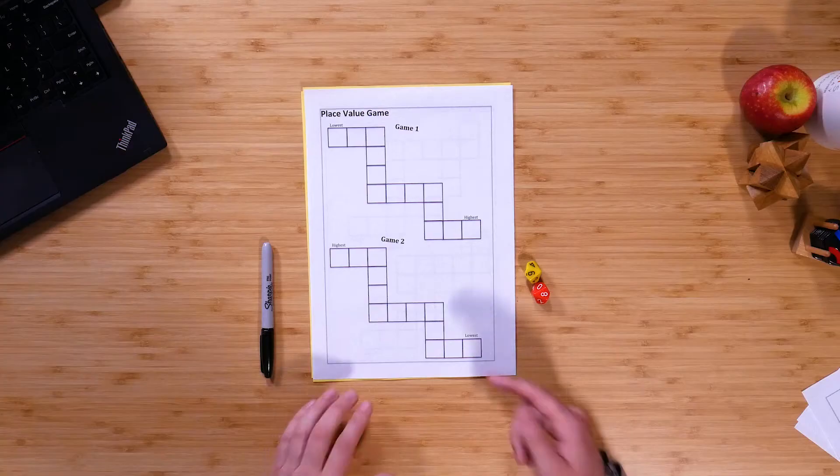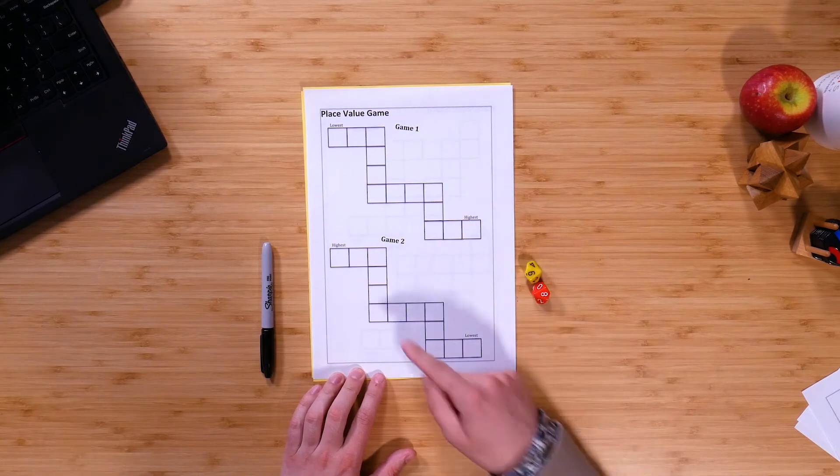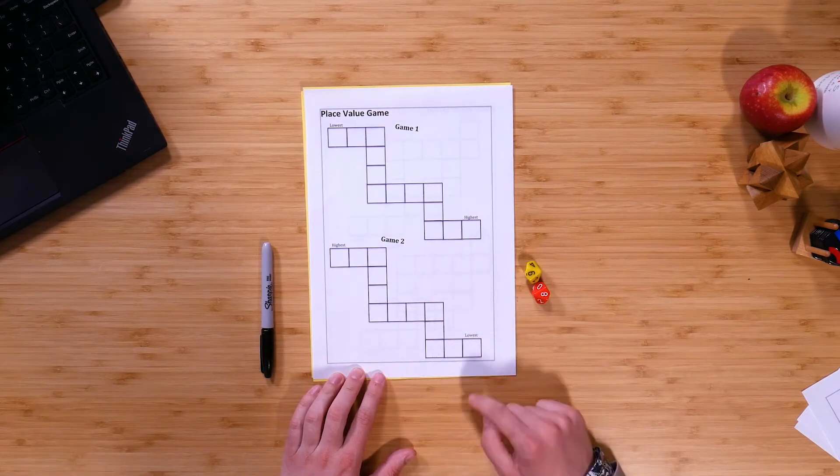So it's always good to have a few extensions up your sleeve so that you can continue to challenge them. Now there's a number of ways you can extend this activity. For example, as you can see here, I have my lowest to highest up the top in the first game, but then of course I've got my highest to lowest that you can see there.